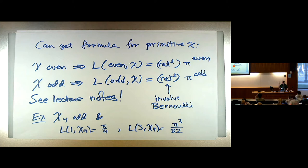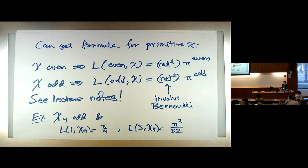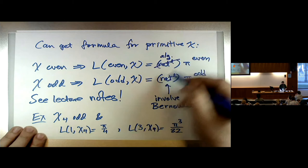In a rush, I knew it: even characters, you have a nice formula at even values; odd characters, you have a nice formula at odd values. I was thinking about the zeta function — it's a nice multiple of a power of pi — and so I said it was a rational multiple. But the character, generally speaking, has for its L function values not rational multiples, but algebraic multiples.